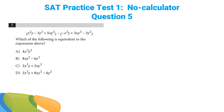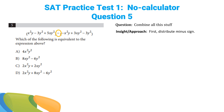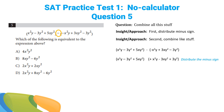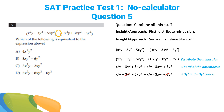Question number 5 is another one where they want you to combine a whole bunch of ugly-looking stuff, but there's a twist. You have to distribute the minus sign first — they like that trick a lot. We distribute that minus sign through the parentheses on the right, which flips the sign of every single term. Then we combine like terms: the negative 3y squared and positive 3y squared cross off, and we get 2x squared plus 2xy squared. That is answer choice C.